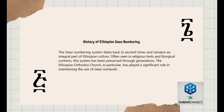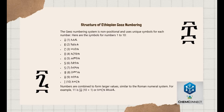History of Ethiopian Ge'ez Numbering: The Ge'ez Numbering System dates back to ancient times and remains an integral part of Ethiopian culture, often seen in religious texts and liturgical contexts. This system has been preserved through generations. The Ethiopian Orthodox Church, in particular, has played a significant role in maintaining the use of Ge'ez Numerals.